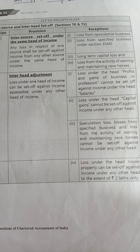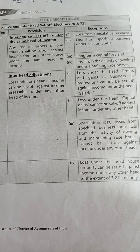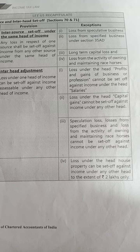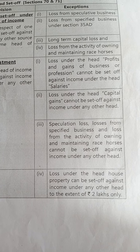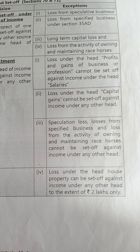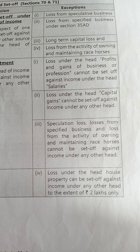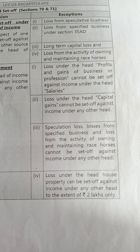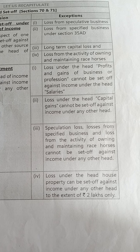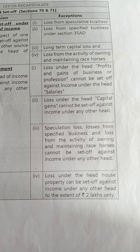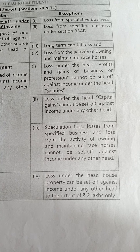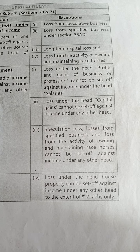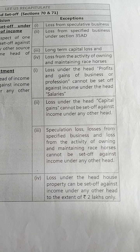The provision states: loss under one head of income can be set off against income assessable under any other head. But again there are exceptions. First: loss under the head profits and gains of business or profession cannot be set off against income under the head salaries — though it can be set off against other heads. Second: loss under the head capital gains cannot be set off against income under any other head; it can only be set off within its own head.